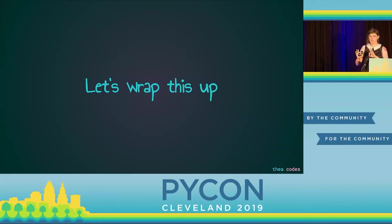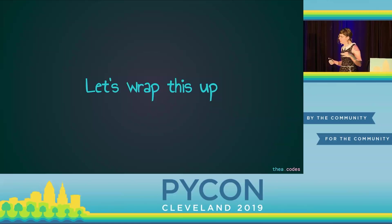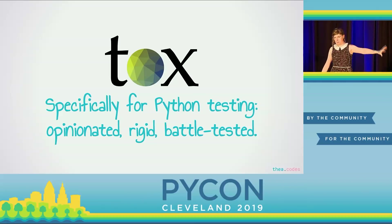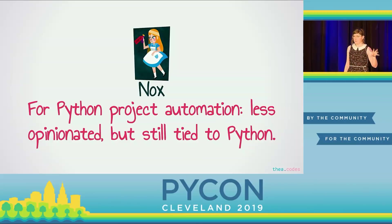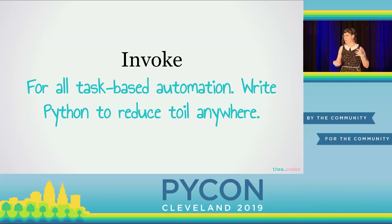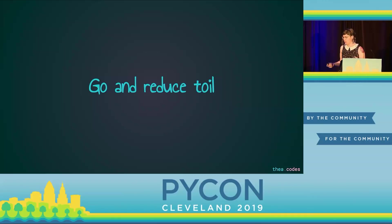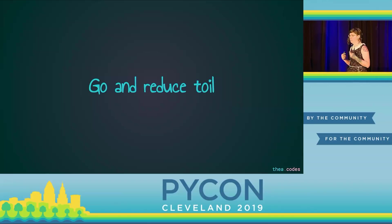All right, that's a lot — I threw a lot at you real fast, showing you three tools that I like to use. Let's wrap it up. I like to think of these tools as a gradient. On one end you have really opinionated, focused tools like Tox. Towards the middle you have less opinionated and more flexible tools like Nox. And then towards the very other end you have really, really flexible tools that don't make a lot of decisions for you, like Invoke. Hopefully these have inspired you to go reduce some toil in your life, and hopefully one of these tools is useful to you in your day-to-day.